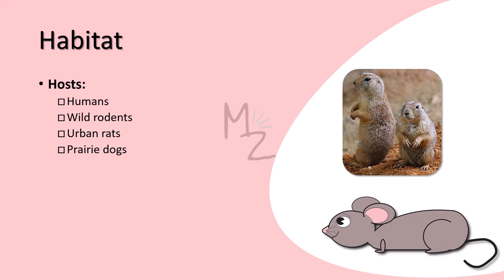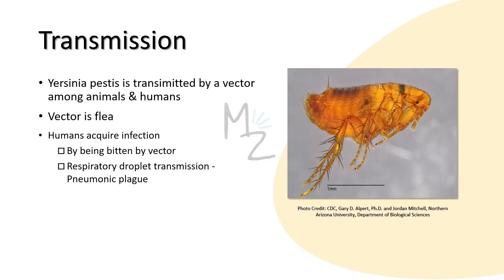Habitat and hosts: along with humans, certain animals serve as hosts of Yersinia pestis, including wild rodents, urban rats, and prairie dogs — which are a type of rodent, not dogs. Transmission: Yersinia pestis is transmitted by a vector, the flea, among animals and to humans. Humans acquire infection by being bitten by the flea. There is also a condition called pneumonic plague, whose transmission occurs via respiratory droplets.